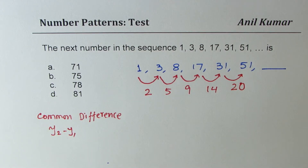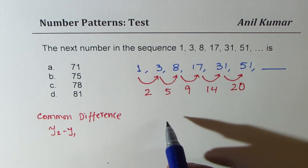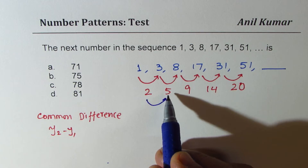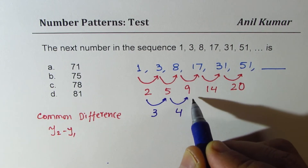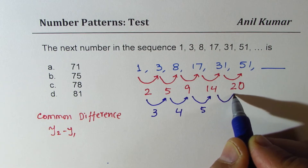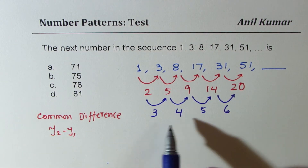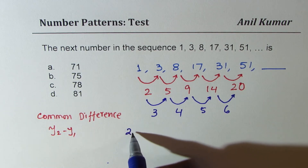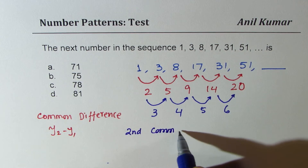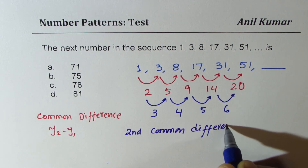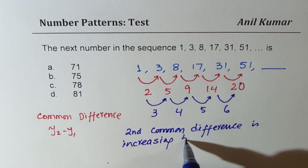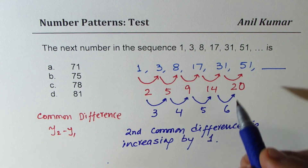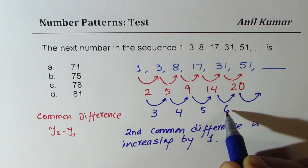The sequence 2, 5, 9, 14, 20 doesn't give an obvious pattern, so let's find the next level of common differences: 5 minus 2 is 3, 9 minus 5 is 4, 14 minus 9 is 5, and 20 minus 14 is 6. Now you can see the pattern — the second-level common difference is increasing by one.